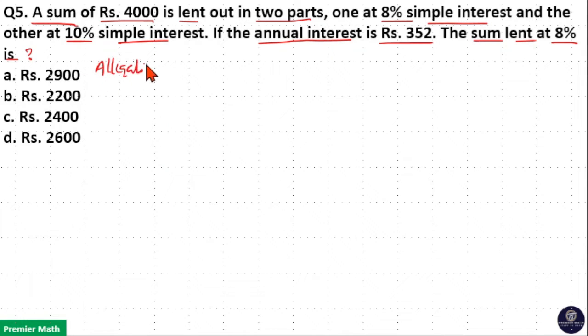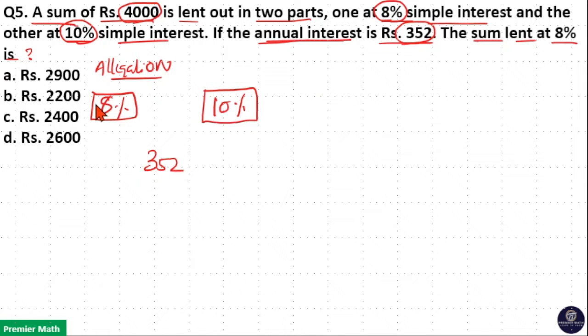Allocation is the best method for these types of problems. Total money is Rs.4000 and one part is lent at 8% and the other part lent at 10%. Annual interest received is Rs.352. This Rs.352 is received from the 8% and 10% sums.